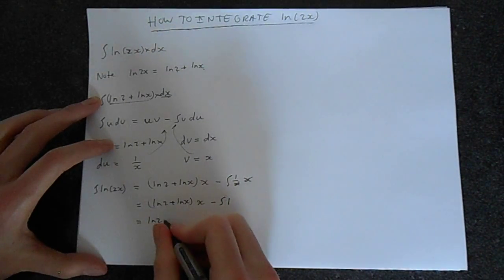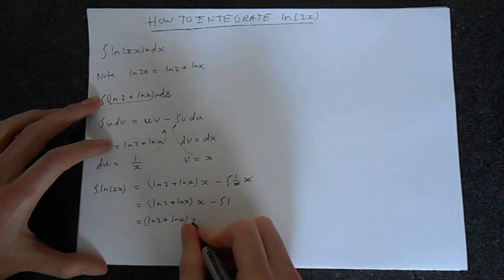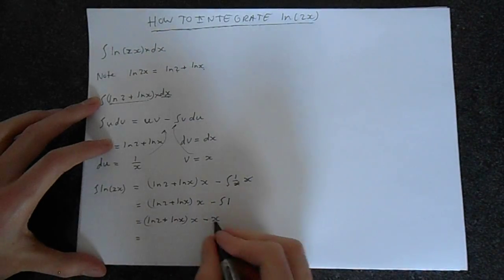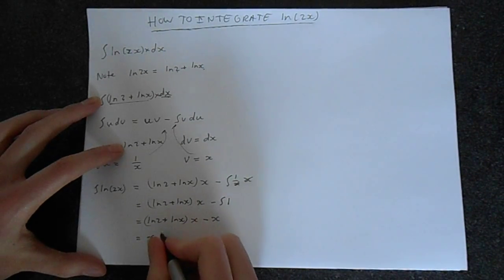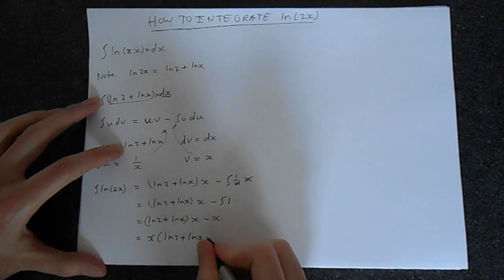So we get ln2 plus lnx times x minus x. We could take x and factorize. So we get x times ln2 plus lnx minus 1.